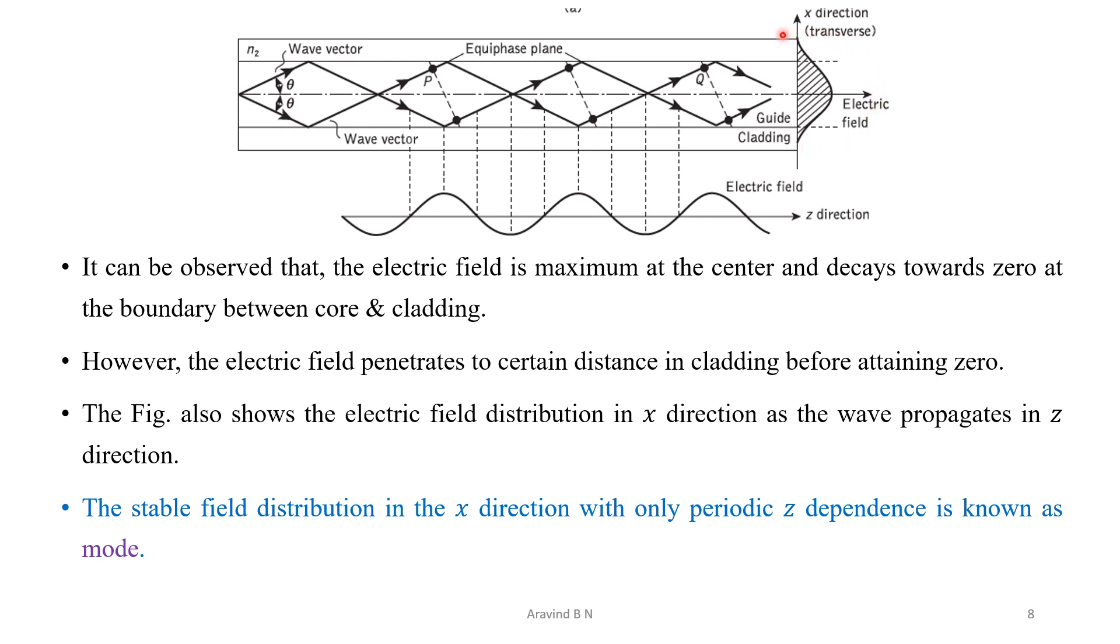Now, this is known as mode zero representation. So, let us have a definition for the mode first over here. The stable field distribution in the x direction with only periodic z dependence is known as the mode. Now, this is known as the mode zero.